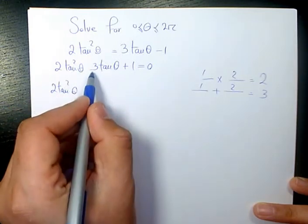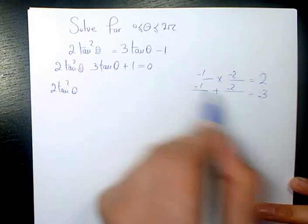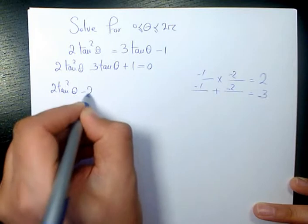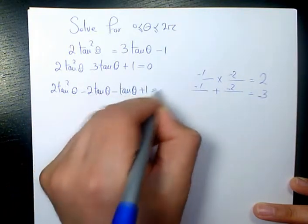Actually that's negative 3, so it's going to be negative 2 and negative 1. So it's going to be 2 tan²θ - 2 tan θ - tan θ + 1 = 0.